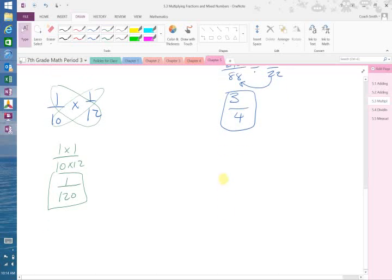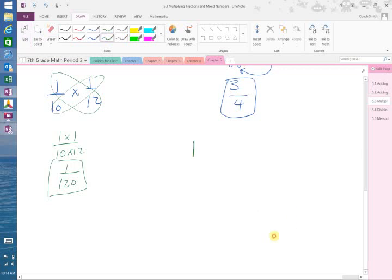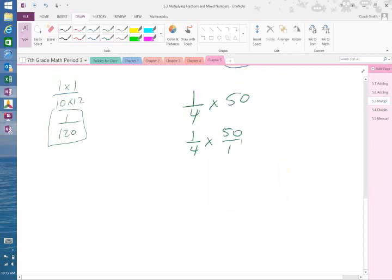If you have this, 1 fourth times 50. Well, 50 is a whole number, but I still have to change it to an improper fraction. And what is 50 as an improper fraction? It's 50 over 1. Now, I look at it and say, can I cross-cancel?